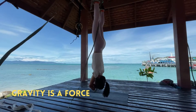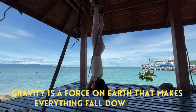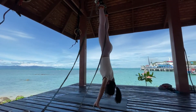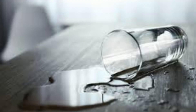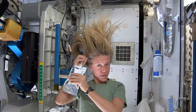Gravity is a force on earth that makes everything fall downward. Actually, downward is different in different parts of the world. A better definition is that everything is pulled toward the center of the earth. Gravity is what makes liquids flow. Without gravity, like in space, liquids would just float around.